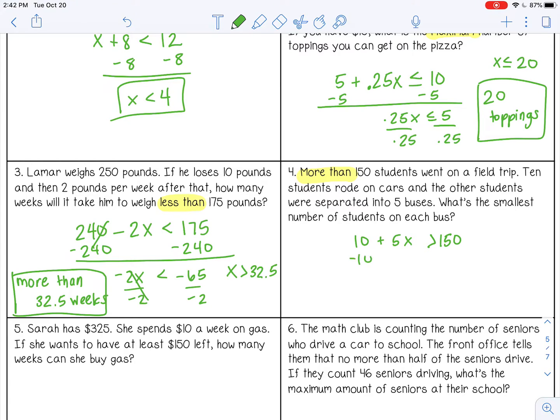So minus 10, minus 10, divided by 5, x is greater than 28. So the question says, what's the smallest number of students on each bus? Well, if the number has to be greater than 28, that means at least 29. 29 students is the smallest amount on each bus. If more than 150 students went.